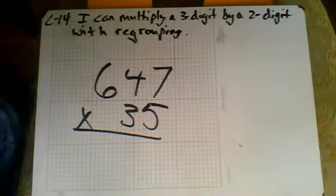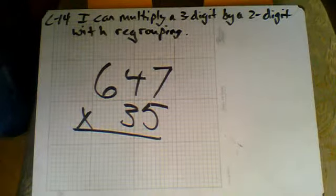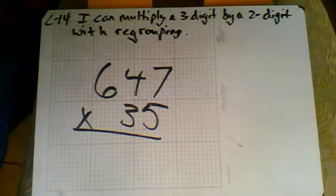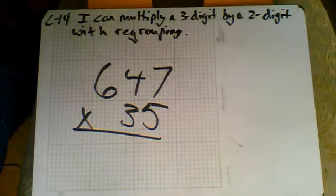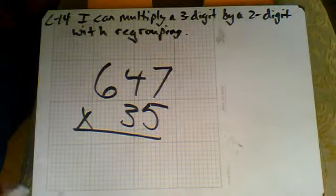Hey folks, we have C14. I can multiply a three-digit number by a two-digit number with regrouping. So we've got a little regrouping involved in this one.